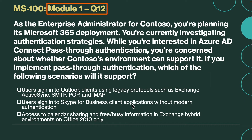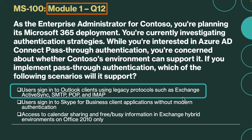Question number 12. As the enterprise administrator for Contoso, you are planning its Microsoft 365 deployment and investigating authentication strategies. You are interested in Azure AD Connect pass-through authentication but concerned about whether Contoso's environment can support it. Which of the following scenarios will pass-through authentication support? The correct answer is users sign in to Outlook clients using legacy protocols such as Exchange Active Sync, SMTP, POP, and IMAP. This is a supported scenario for implementing pass-through authentication.